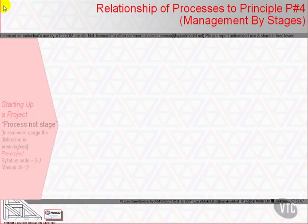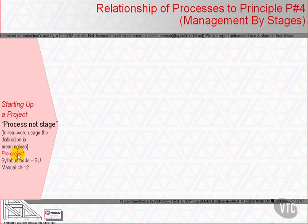The first process is Starting Up a Project — it's a process, not a stage, though in the real world that's a meaningless distinction. It's a pre-project process; its syllabus code is SU and its manual chapter is 12. It defines task and team, examines relevant lessons, and sets up the initiation stage's plan and control regime.